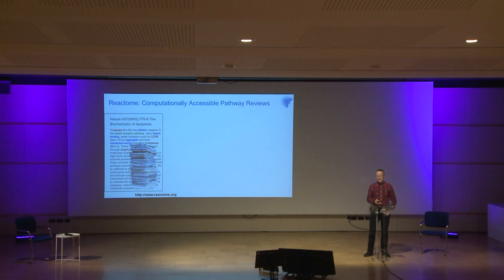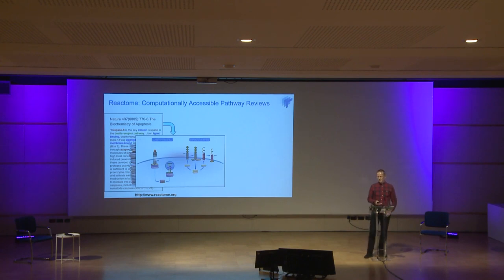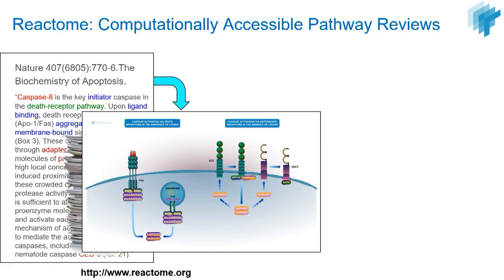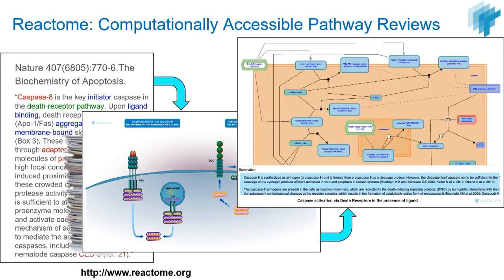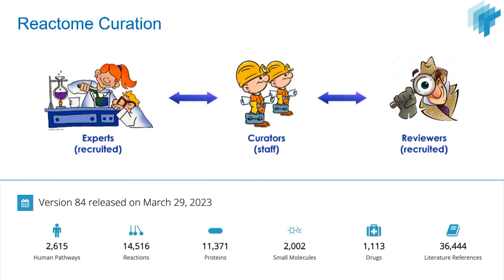Reactome is a pathways database. We go from literature — piles of literature — to what we call computationally accessible pathway reviews, which at high levels of the pathway hierarchy have attractive visual representations, then go down to detailed molecular maps. We do curation similarly to peer review: we recruit external domain experts who work with curators to get the data representation right, and then reviewers to make sure we don't represent only one group's view. This is a fairly laborious process that depends a lot on voluntary contributors, namely domain experts and reviewers.